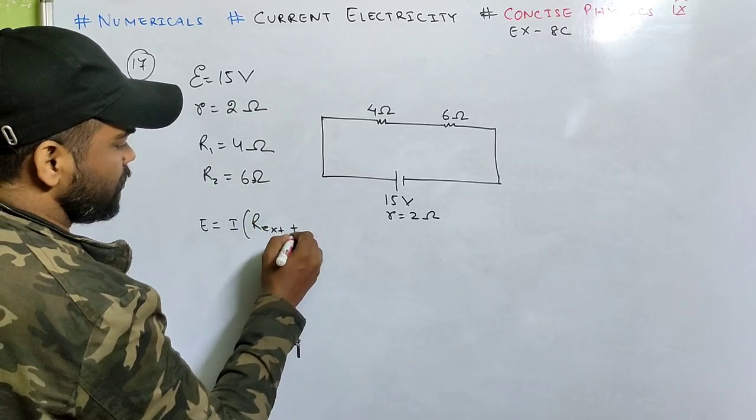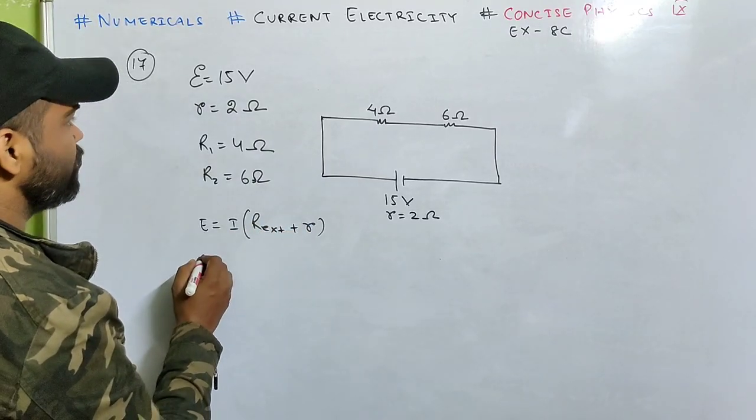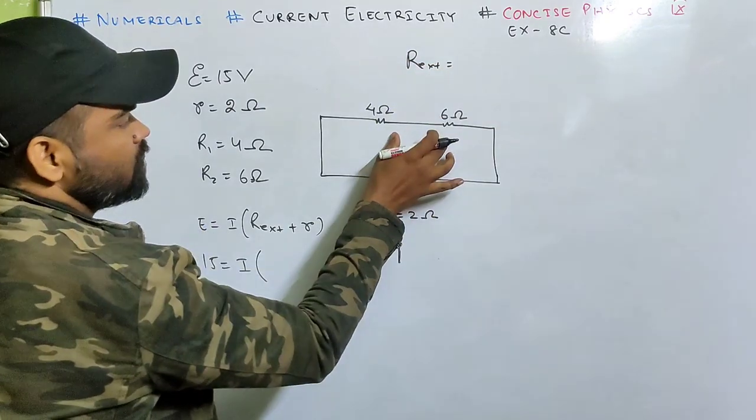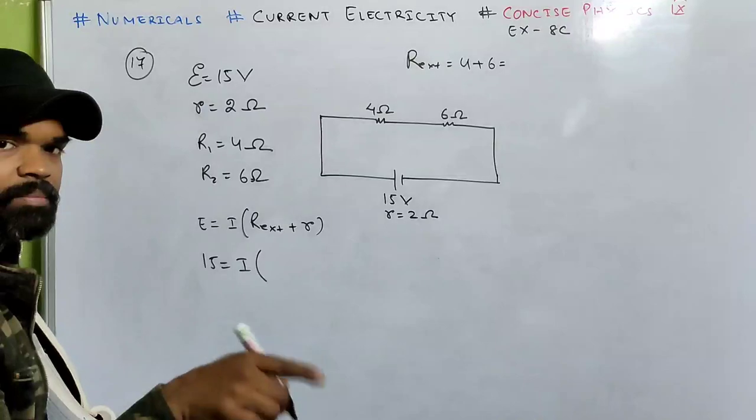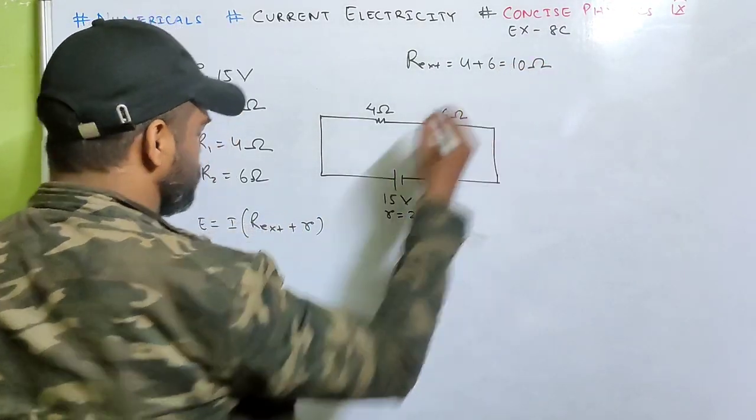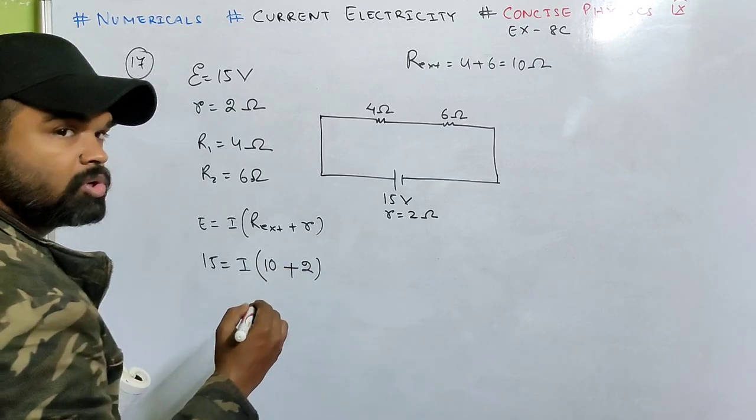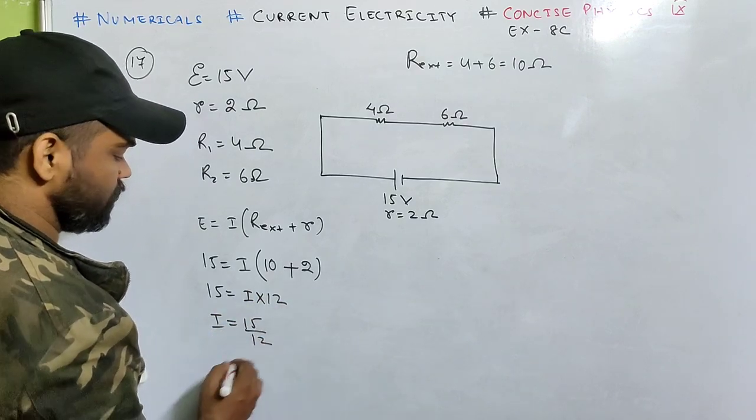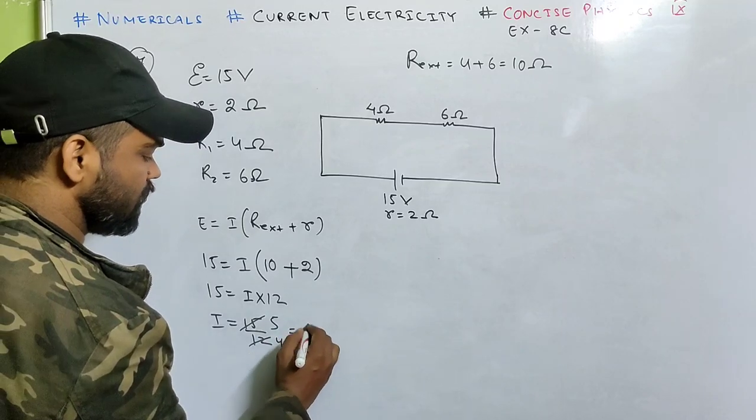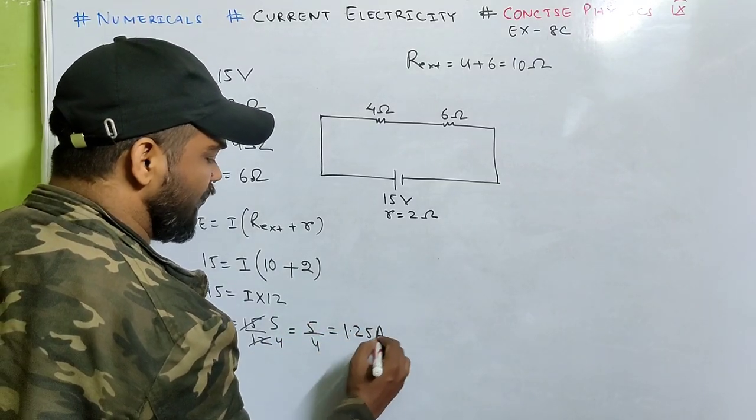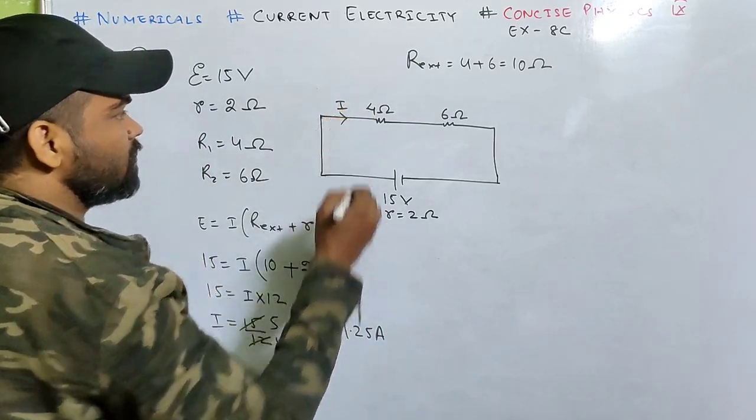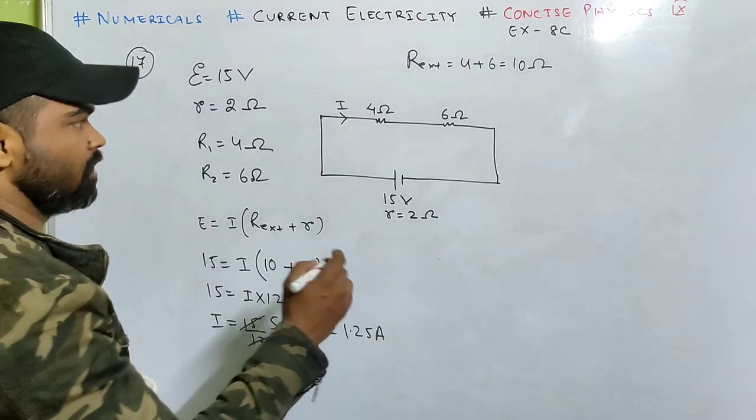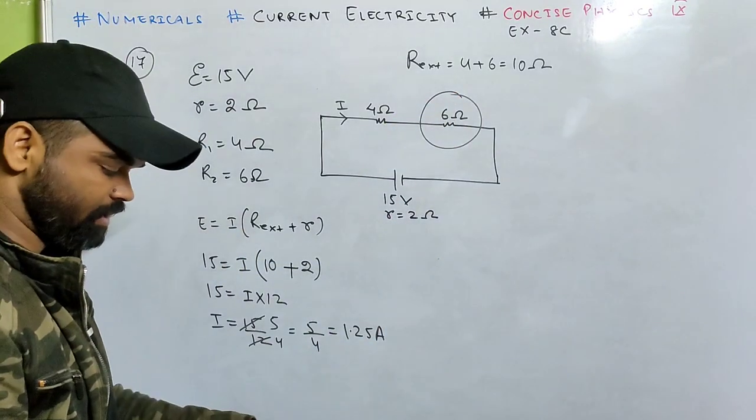First I'll try to find the current in the circuit. EMF equals I times R external plus R internal. So 15 equals I times, these two are in series so they add, R1 plus R2 is 10 ohm, plus internal resistance is 2. So 15 equals I into 12, therefore I equals 15 by 12, which is 5 by 4, that's 1.25 ampere.